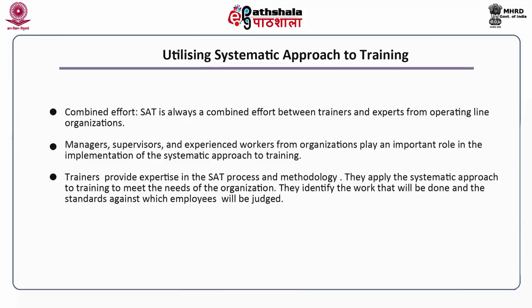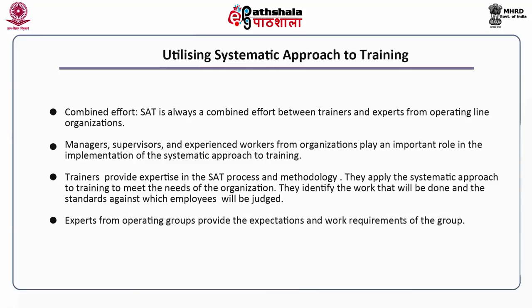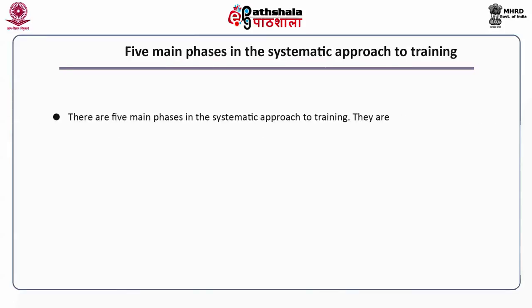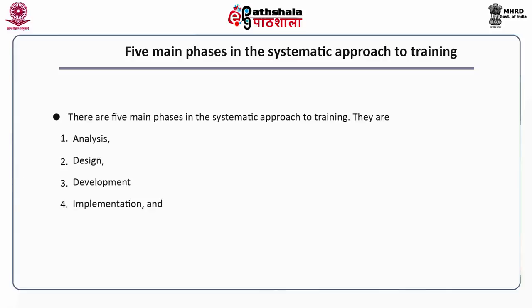Trainers identify the work that will be done and the standards against which employees will be judged. Experts from operating groups provide the expectations and work requirements of the group. The systematic approach to training ensures that the training program supports the organization's need for human performance and that people are prepared and capable to do their jobs. The five main phases in the systematic approach to training are analysis, design, development, implementation and evaluation.